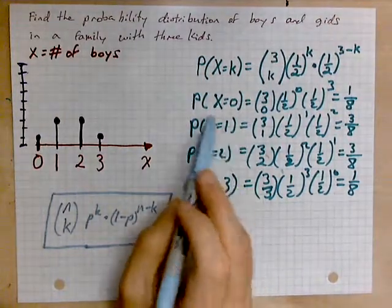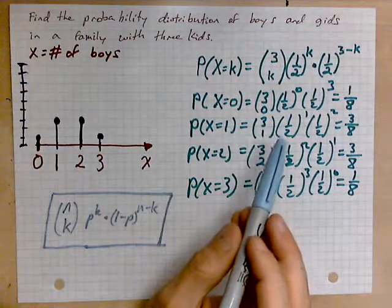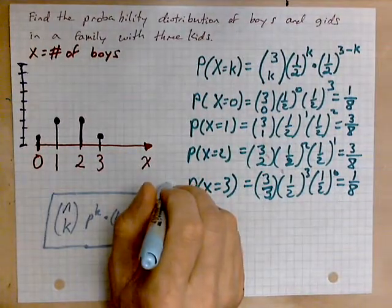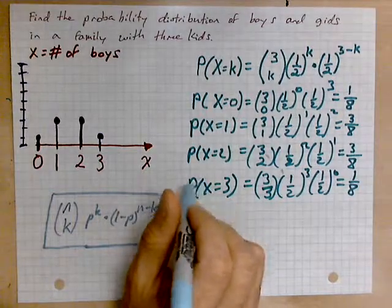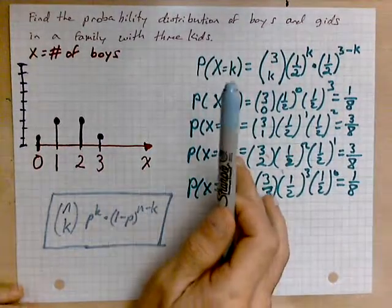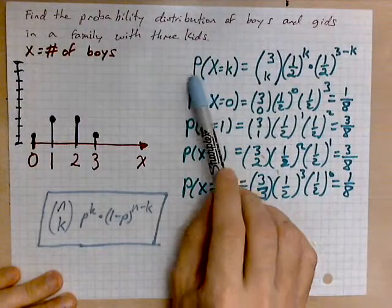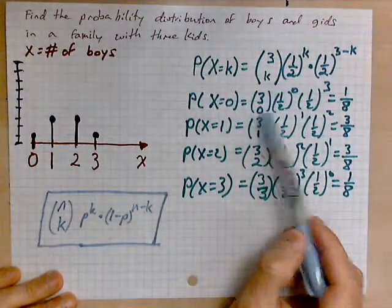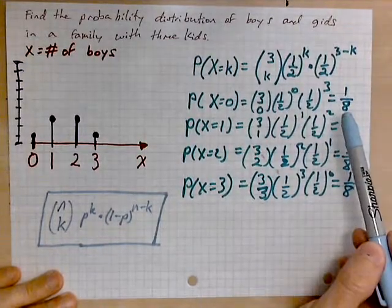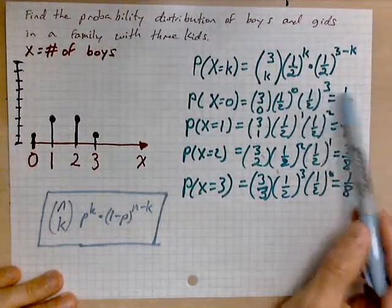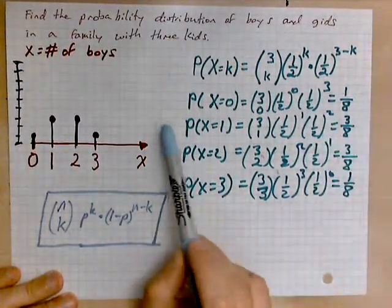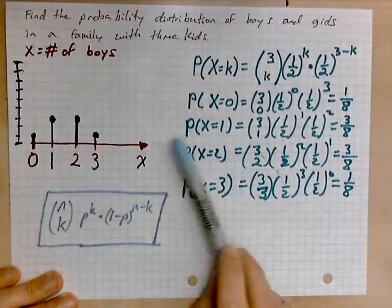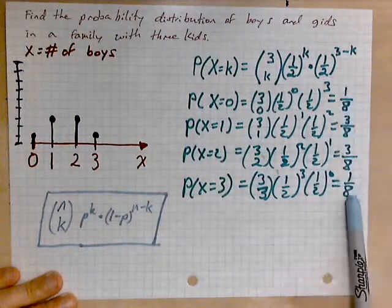And you're assuming that from kid to kid there is independence — if you have a boy or a girl first, it means nothing about the gender of the second. Then you apply the basic definition of the binomial. The probability that X equals zero, meaning zero boys, is C(3,0) times (1/2)^0 times (1/2)^3, which is one-eighth. You go through the rest of these steps to get the probabilities for one boy, two boys, and three boys.